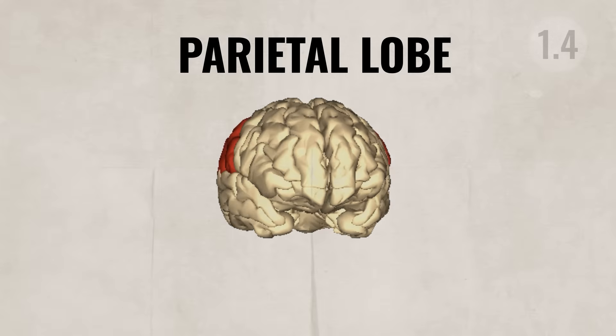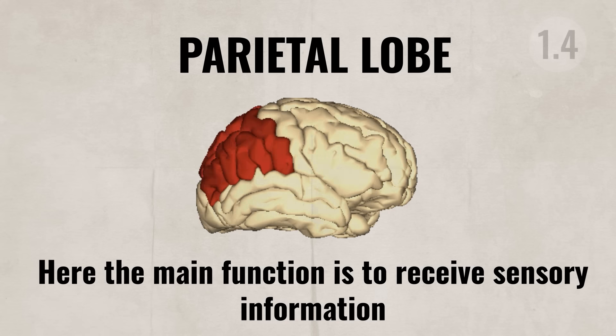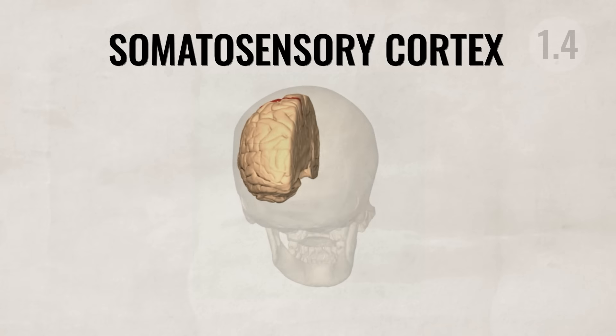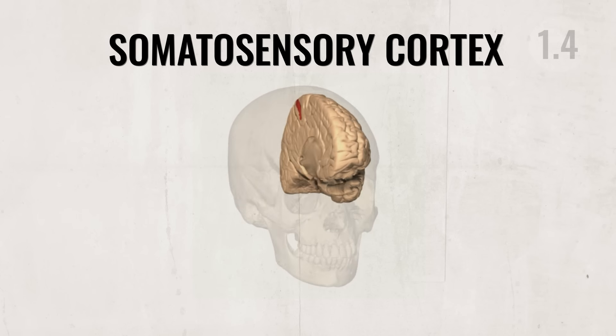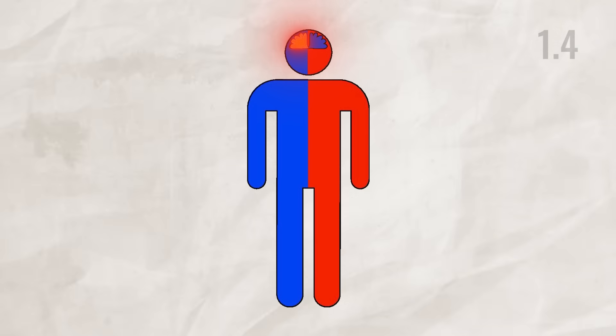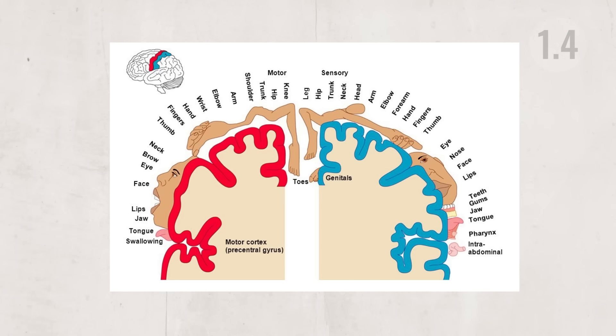The parietal lobe is located in the upper part of the brain right behind the frontal lobe. Its main function is to receive sensory information — understanding touch, pain, temperature, spatial orientation, and organizing information. The somatosensory cortex is situated parallel to and directly behind the motor cortex, and is responsible for processing touch, pressure, temperature, and body position. The left sensory cortex controls sensations for the right side of the body and vice versa. We can visualize the brain area dedicated to specific body parts through the sensory homunculus.